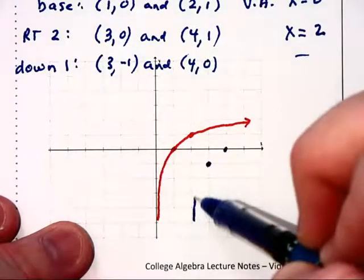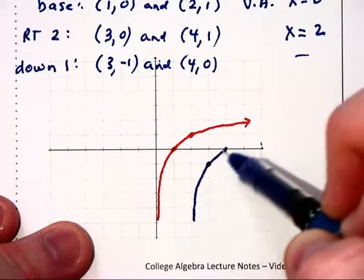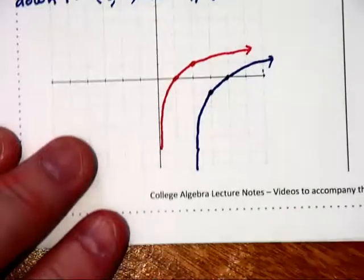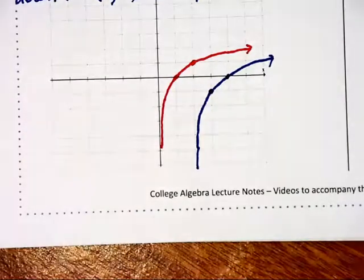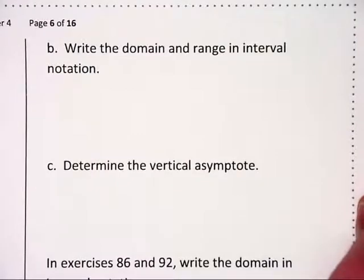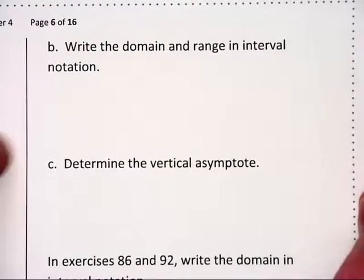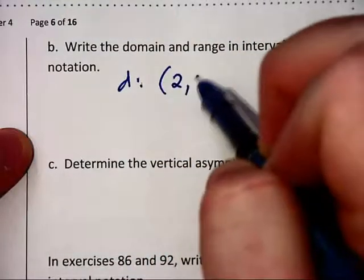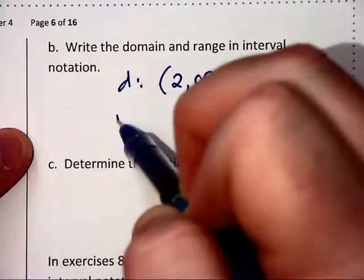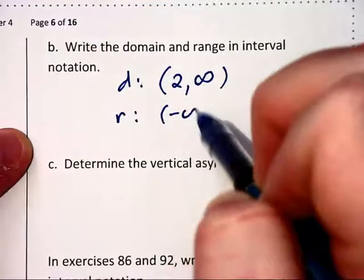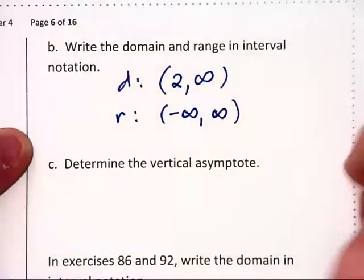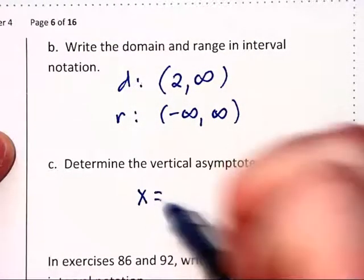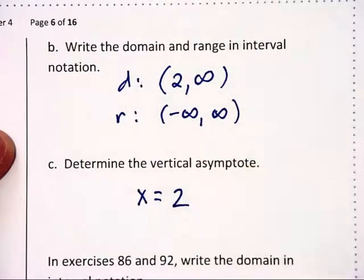And here's that line x equals 2. And so there's our graph shifted 2 to the right and 1 down. They're now asking for the domain of this last graph, and our domain will be from 2, which we don't include, on up to infinity, and the range is going to be all real numbers from negative infinity to positive infinity. Where is the vertical asymptote? It's now the vertical line x is equal to 2.